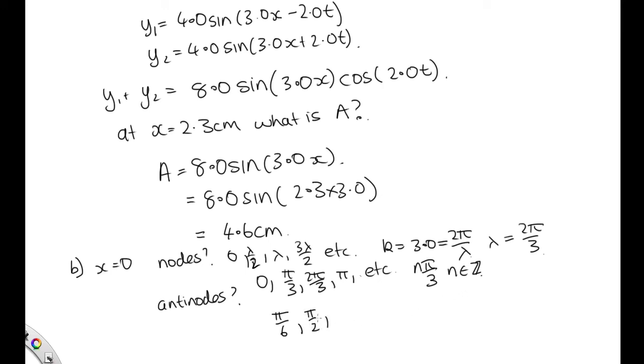The general form is a quarter wavelength, or (2π/3) divided by 4, times n, where n equals 1, 3, 5, 7, and so on. Simplifying, we have nπ/6 where n equals 1, 3, 5, 7, giving us the anti-node positions.